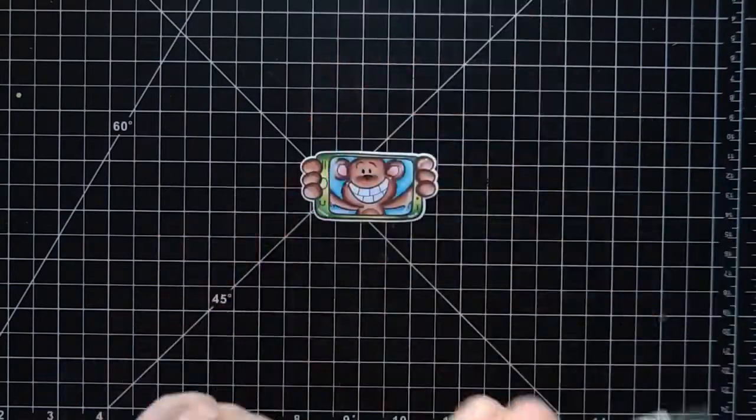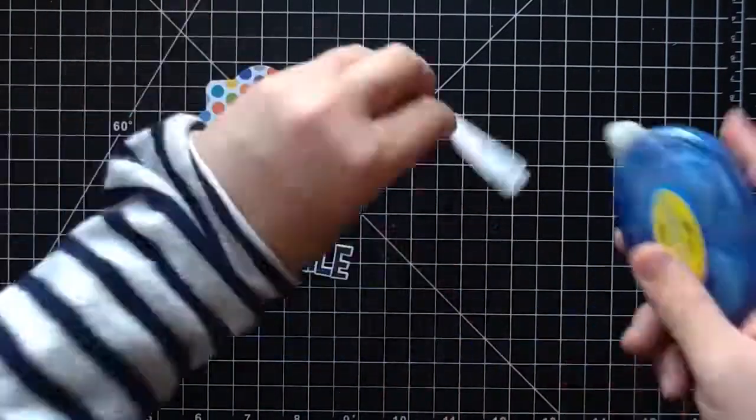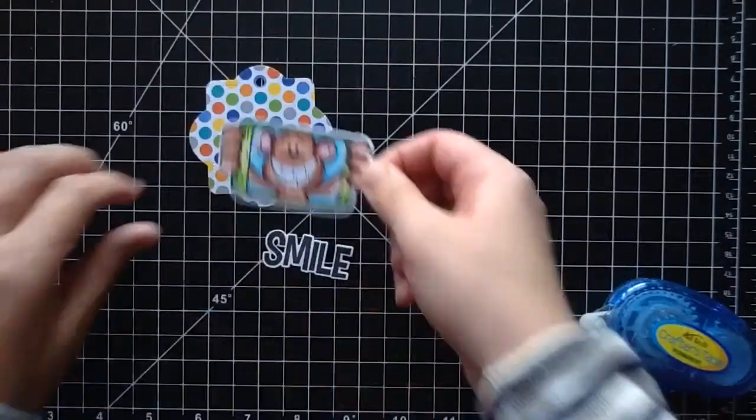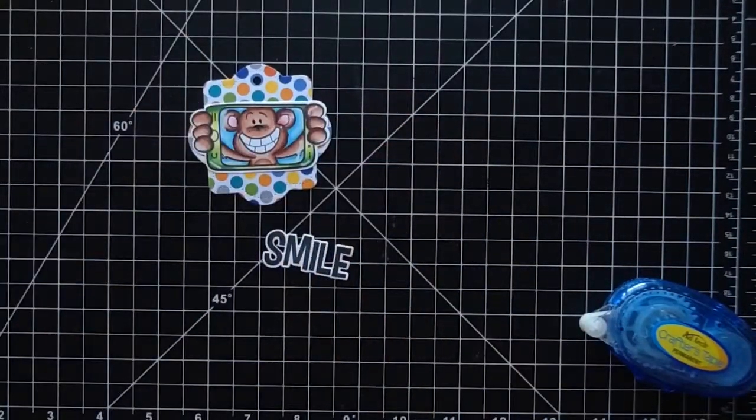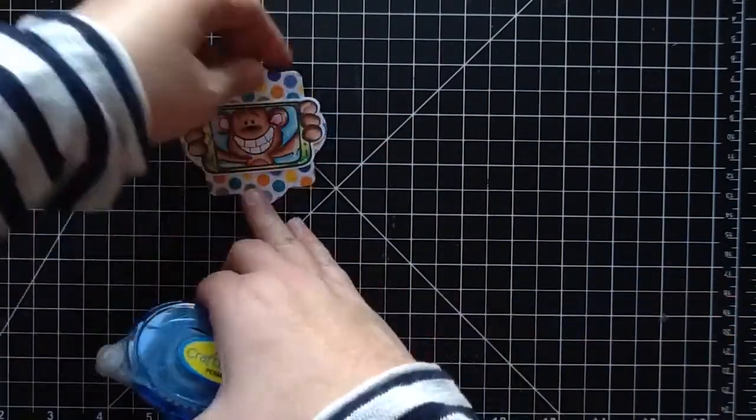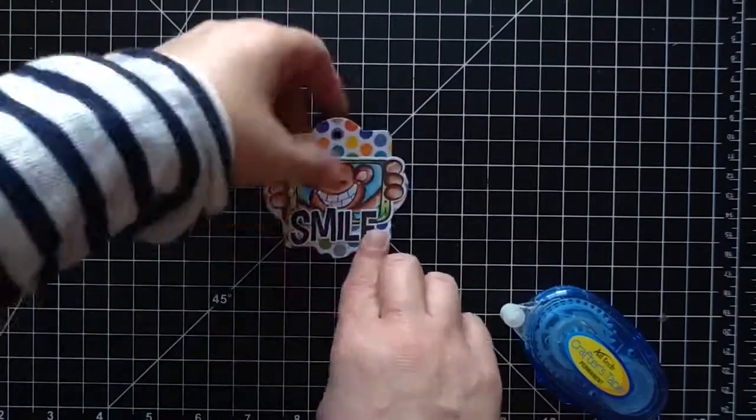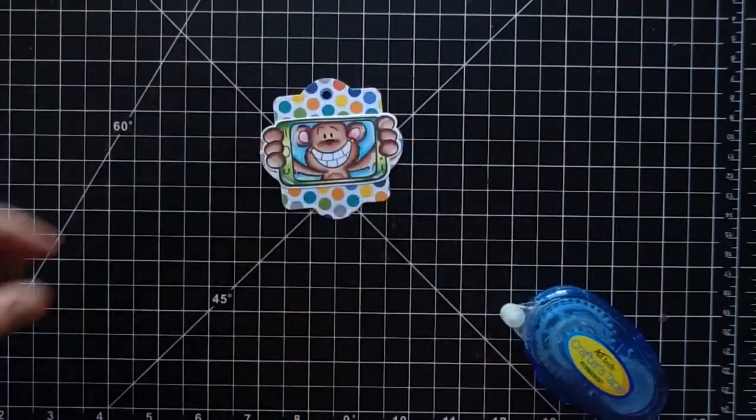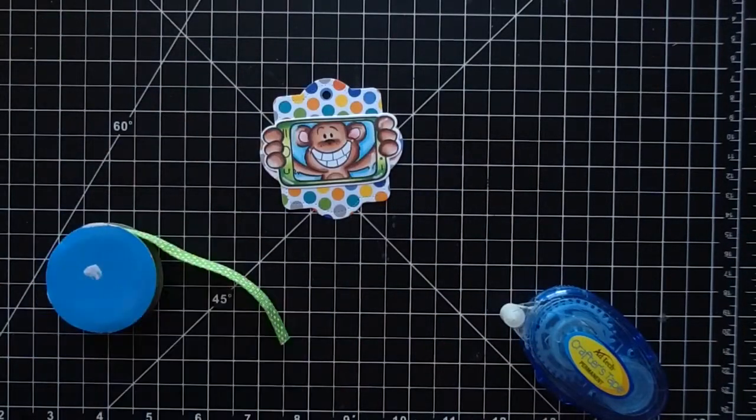Now I'm going to take my adhesive and put this onto the tag. It goes perfectly on the front there. I'm adding that on the front, and then I couldn't decide if I wanted the smile to be on the front or if I wanted it to be on the back, but I thought it looked really cute on the back there with the blue background.